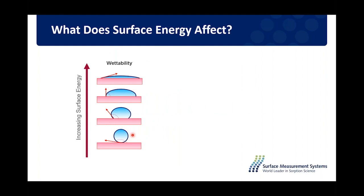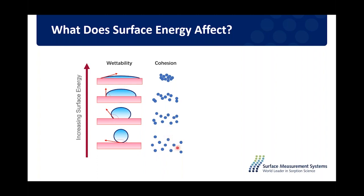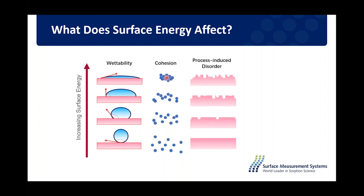If I increase the surface energy of a surface I can increase the wettability — the higher the energy, the more likely a droplet of water might wet that surface. For a powder or granule, increasing surface energy increases cohesive forces as particles will want to stick together. If I'm thinking about milling or process-induced disorder, those actions change the surface chemistry, not just particle size. Grinding, plasma etching, or surface treatments can expose buried interfaces, create surface disorder, create amorphous sites at the surface — all of which can be tracked and monitored by surface energy.